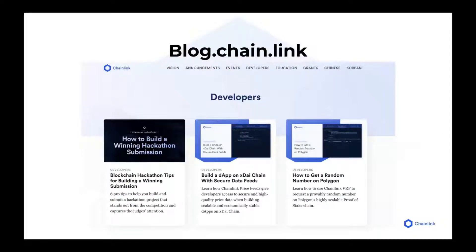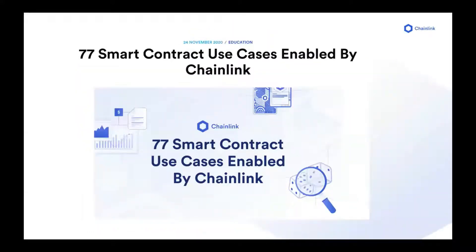The blog is another great place to get easily digestible articles on how Chainlink works and fun guides on how to build specific Chainlink projects. One of my favorites and one of the most popular blog posts is the '77 Smart Contract Use Cases Enabled by Chainlink.' If you've been listening to these Chainlink talks and think this technology is awesome but aren't sure where it can be applied, I really suggest reading this blog. It has a lot of cool ideas on where smart contracts and Chainlink can make a huge impact. Who knows — you could read this and it could be the spark that leads you to become the next Aave or Synthetix with billions of dollars locked in your protocol.